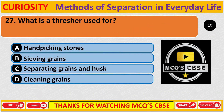Question: What is a thresher used for? Correct answer is C: Separating grain and husk.